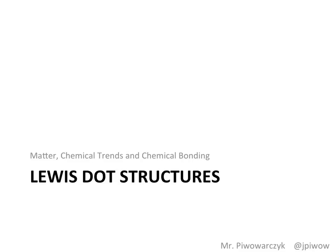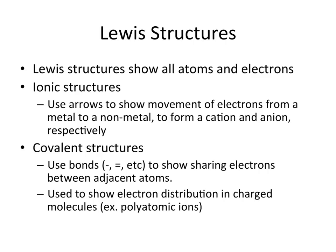Hey folks, welcome to this lesson on Lewis dot structures. We have two types of Lewis structures: ionic structures and covalent structures.